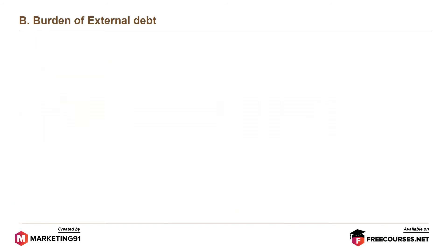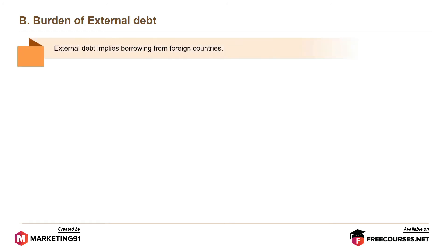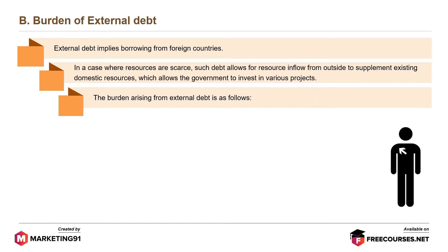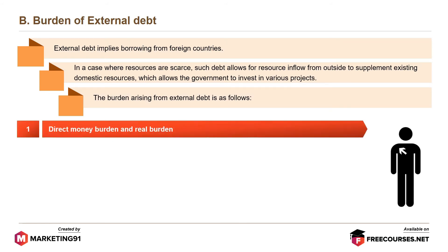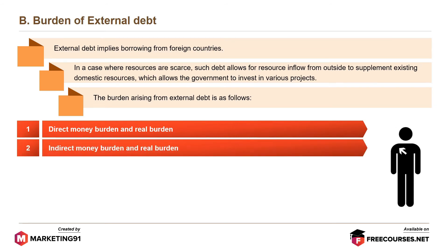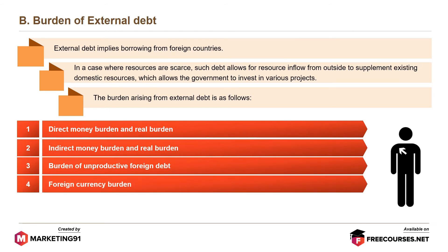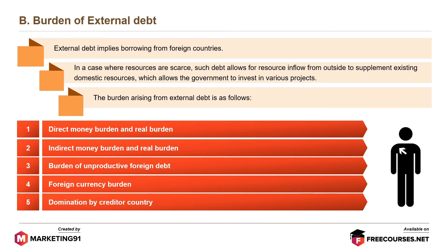The burden of external debt: External debt implies borrowing from foreign countries. In cases where resources are scarce, such debt allows for resource inflow from outside to supplement existing domestic resources, enabling the government to invest in various projects. The burdens arising from external debt include: a direct money burden and real burden; an indirect money burden and real burden; the burden of unproductive foreign debt; and the burden of foreign currency dependency and domination by the creditor country.